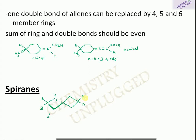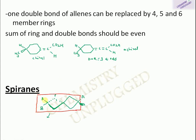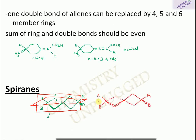Next are spiranes — spiro compounds in which rings are fused by a single carbon atom. In a spirane, one ring is in the plane and the other comes out of the plane. If both terminal carbons carry identical substituents (e.g., two A's on one and two B's on the other), vertical and horizontal planes of symmetry exist and the spirane is achiral. But if both carbons carry two different substituents, no plane can divide the spirane into equal halves, making it chiral.